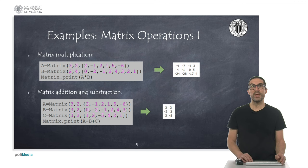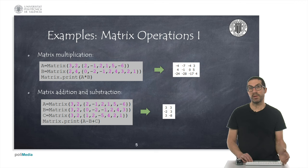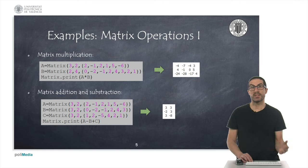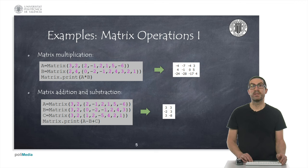We can multiply two matrices by using the star operator, or multiplication operator. We can also add and subtract matrices using the plus and minus signs. We can even perform arithmetic operations with a scalar that will affect all the elements of the matrix.